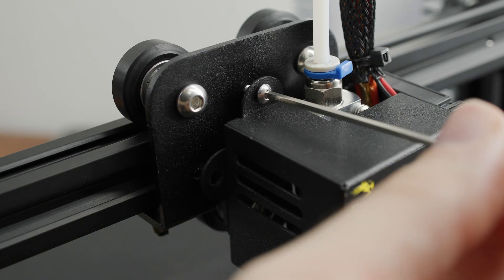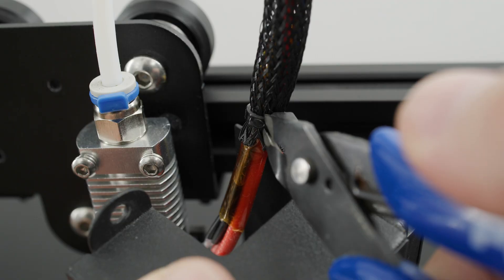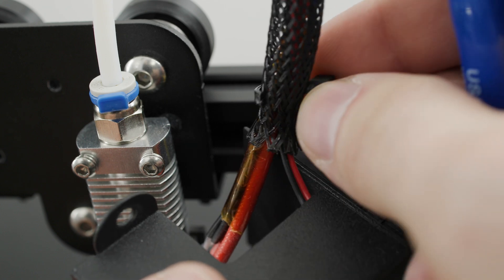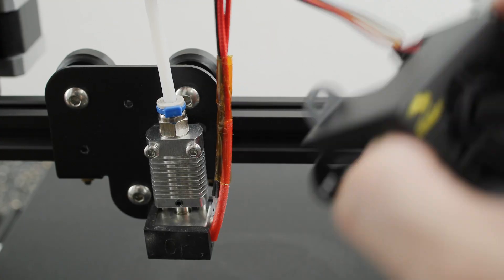First you need to remove the hotend cover. After taking it off, I recommend removing this zip tie for easier handling of the hotend.